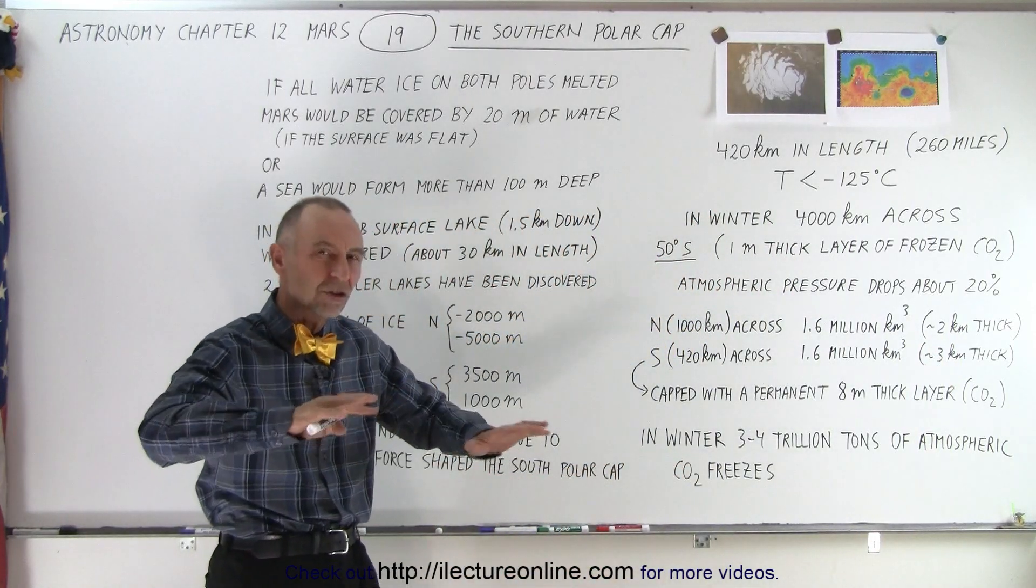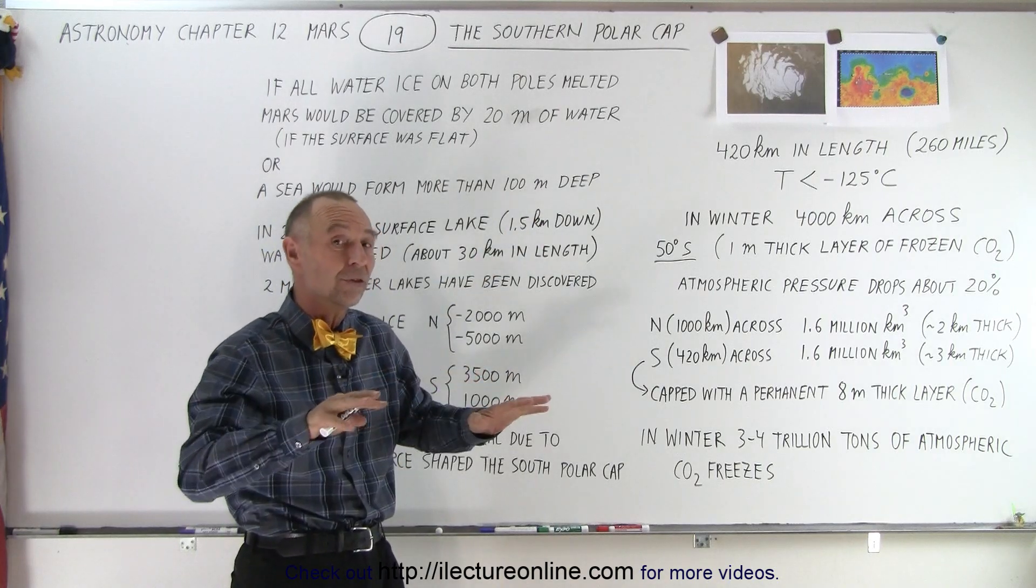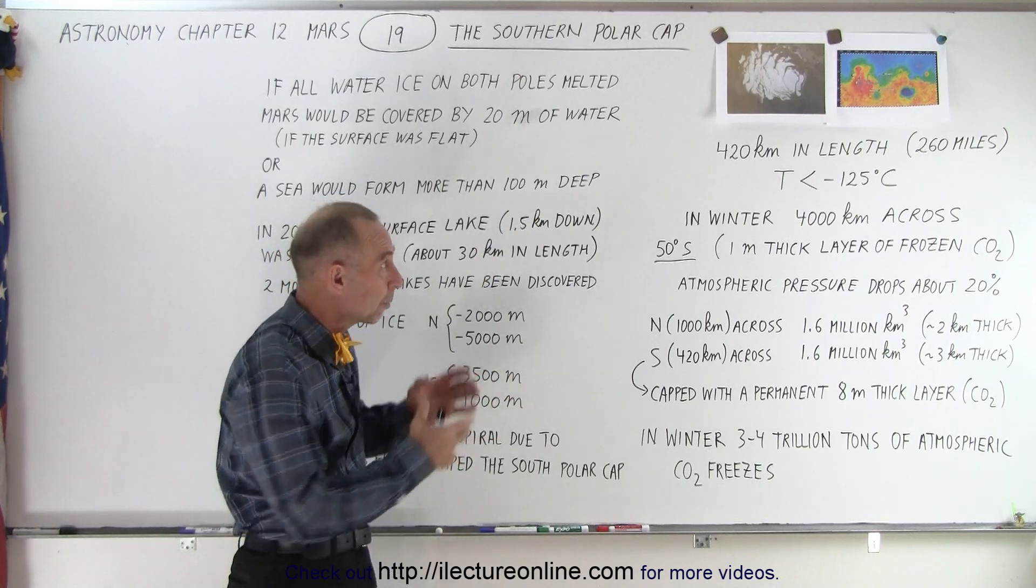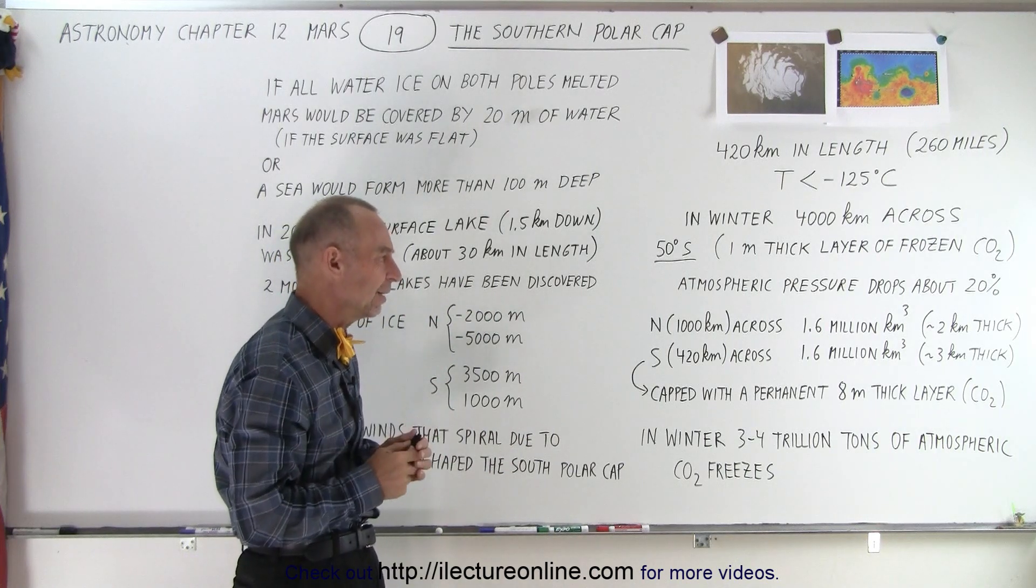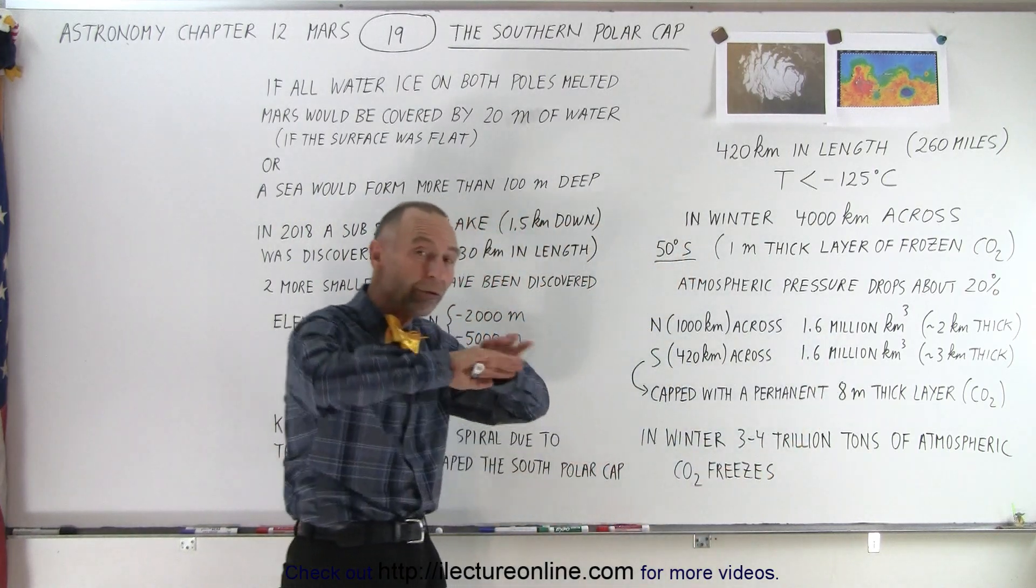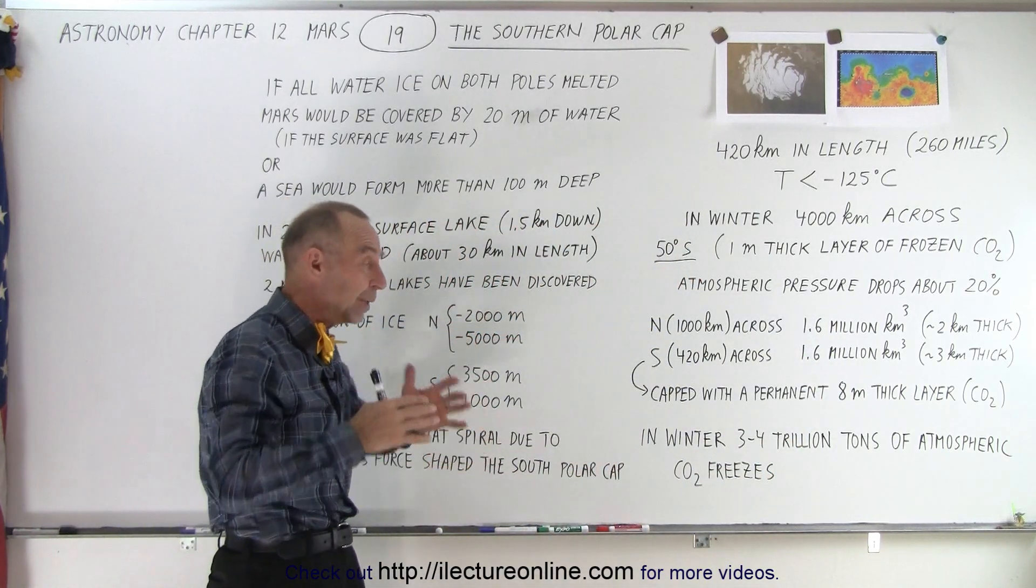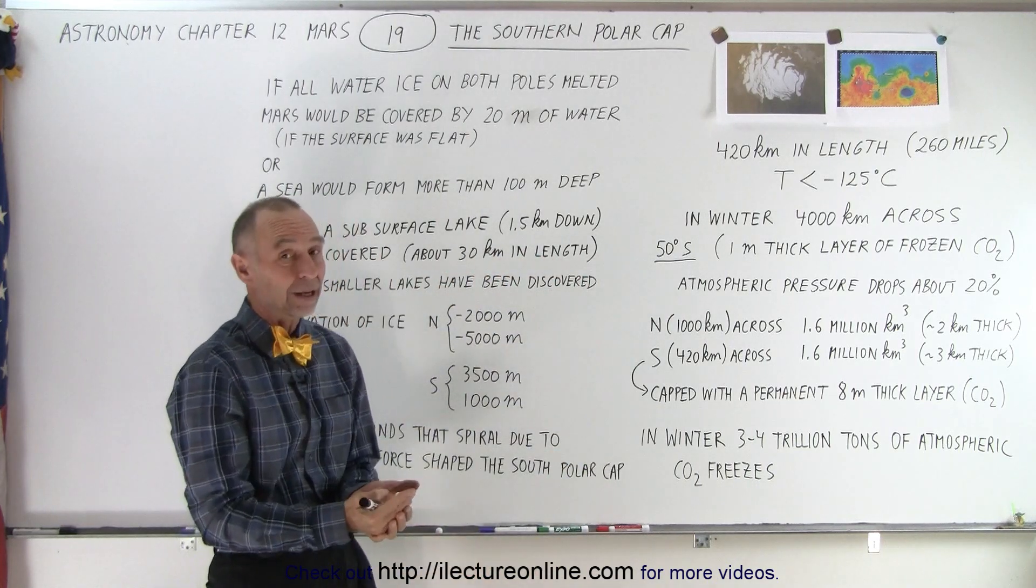And in addition, there's additional layers of ice that extend beyond the Polar Cap that are subsurface which we've been able to detect but which don't readily show up on the picture as well. Now that's a lot of ice. If all of that ice were to melt and the surface of Mars was flat, it would add up to about a layer of 20 plus meters across the entire surface of the planet.